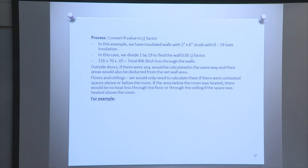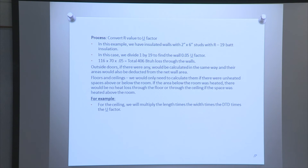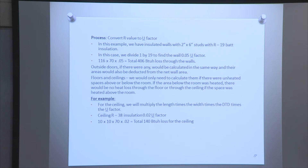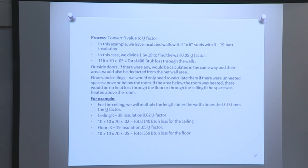Floors and ceilings only need to be calculated if there is unheated space above or below them. If the area below the room is heated, there is no heat loss through the floor; similarly for the ceiling if the space above is heated. For the ceiling: length times width times DDT times U-factor. With R38 ceiling insulation, the U-factor is 0.02: 10 times 10 times 70 times 0.02 equals 140 BTUs of heat loss for the ceiling. For the floor with R19 insulation, U-factor 0.05: 10 times 10 times 70 times 0.05 equals 350 BTUs of heat loss for the floor.